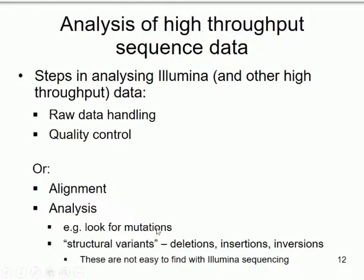Some differences may be simple point mutations, which are easy to pick up using Illumina sequencing. We may also have deletions, insertions where a piece of DNA has moved from elsewhere in the genome, or inversions. These are not so easy to pick up with Illumina sequencing — there can be issues, and you need a deeper level of analysis to detect them. That's an important point I'll return to later.